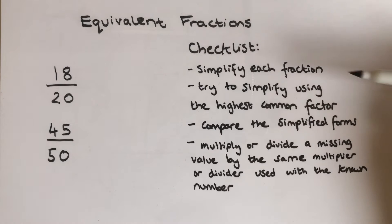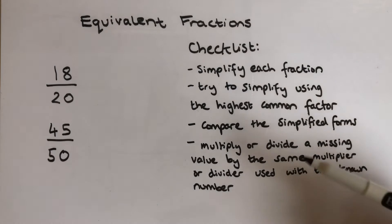Our checklist says that we're going to simplify each fraction. We're going to try to simplify using the highest common factor. And if you don't remember how to do this, you can look at my previous video about how to simplify fractions. We're then going to compare the simplified forms to see if they are equivalent. And equivalent just means, are they the same? We're then going to look at missing values when it comes to equivalent fractions.